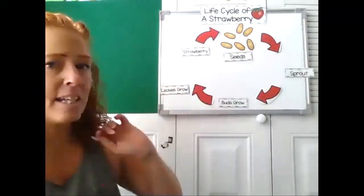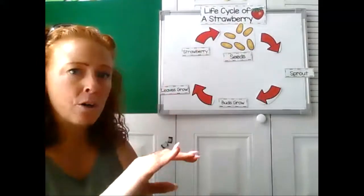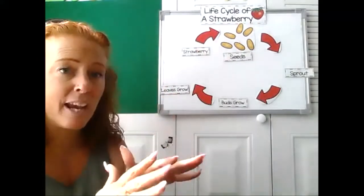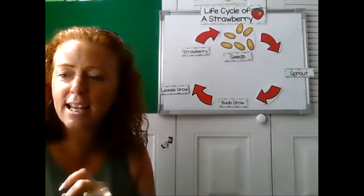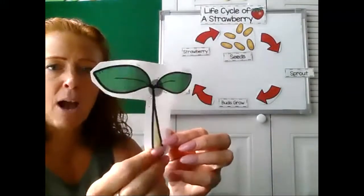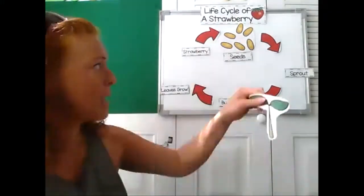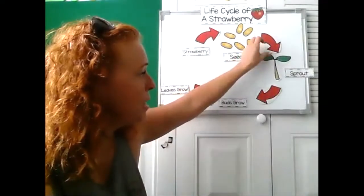So you plant the seeds in the soil and you water them and you watch and you take care of them to make sure they grow and they're in the sun. And eventually what you'll get is a sprout or a seedling, which is a baby plant. I'll put that right there.